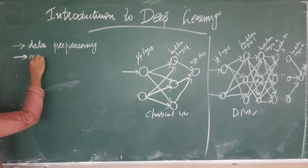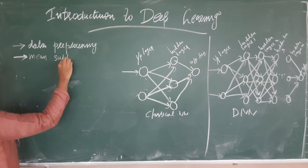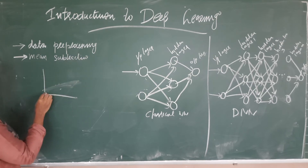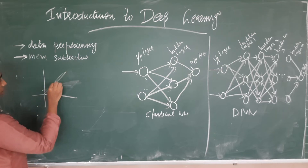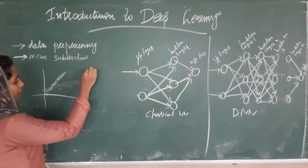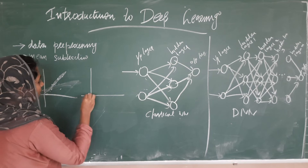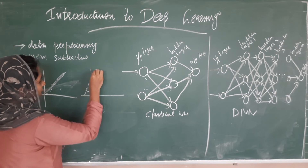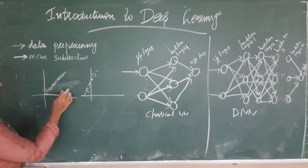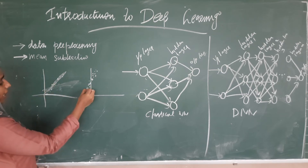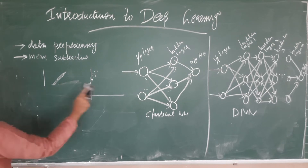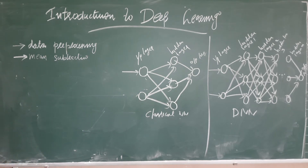Another step is mean subtraction. For example, if your data points are lying off-center on the axes, you can subtract the mean from the data so that the data becomes zero-centered. The processing then becomes much easier. So the original data, after subtracting the mean from every data point, becomes zero-centered, which makes subsequent calculations very easy and is very instrumental in the analysis.